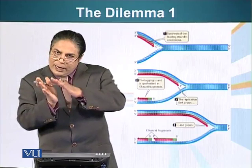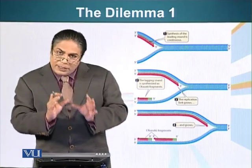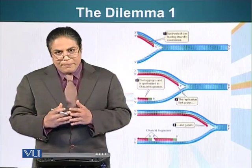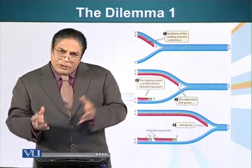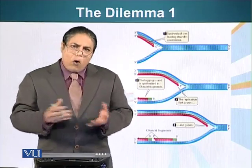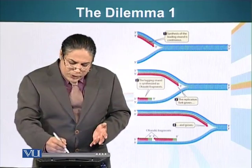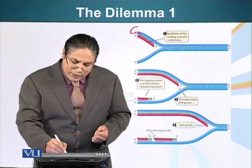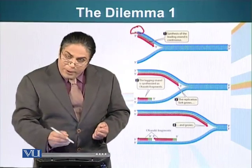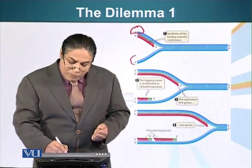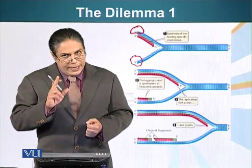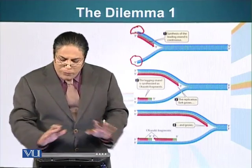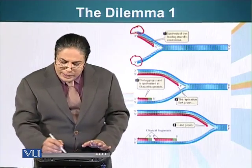But the other strand — the lagging strand — can only be synthesized in the area where DNA has separated. This strand is sort of being made in the wrong direction. As you can see here, there is the three prime end of the template DNA, and the complementary strand would have a five prime end because the DNA is anti-parallel. So it's pretty straightforward to make the leading strand.